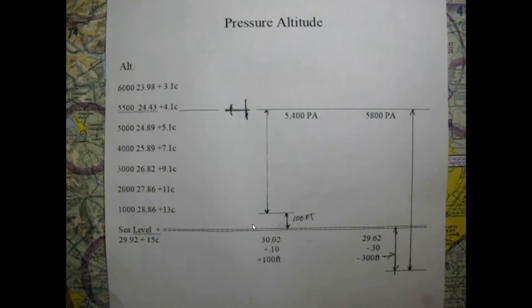What does that mean for you as a pilot? Flying at 5,500 feet on a standard pressure day with the altimeter set to 29.92 is fine. But if we fly into a high pressure area of 30.02 without making the correction, our altimeter will display 5,400 feet. So we'll climb to get the altimeter to read 5,500 feet - but we were already at 5,500 feet. We end up 100 feet higher than intended.